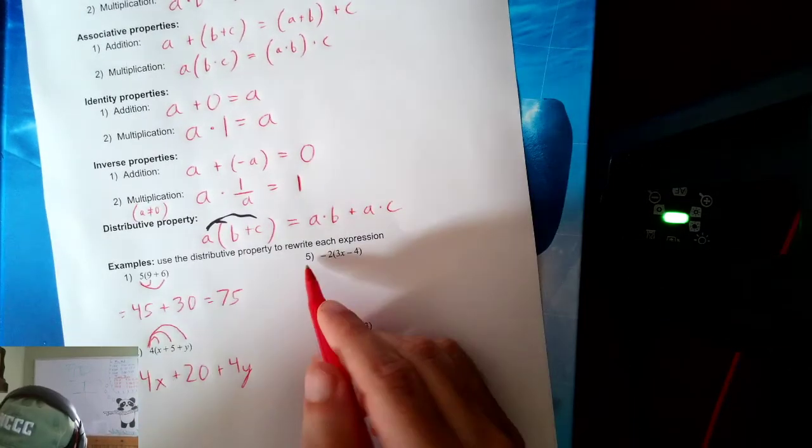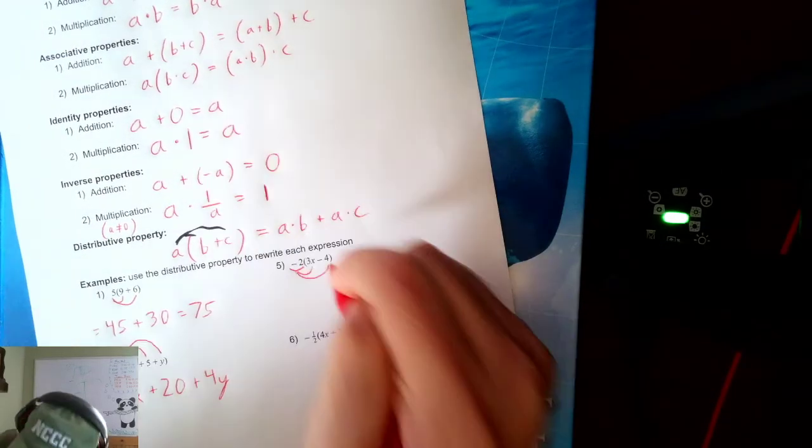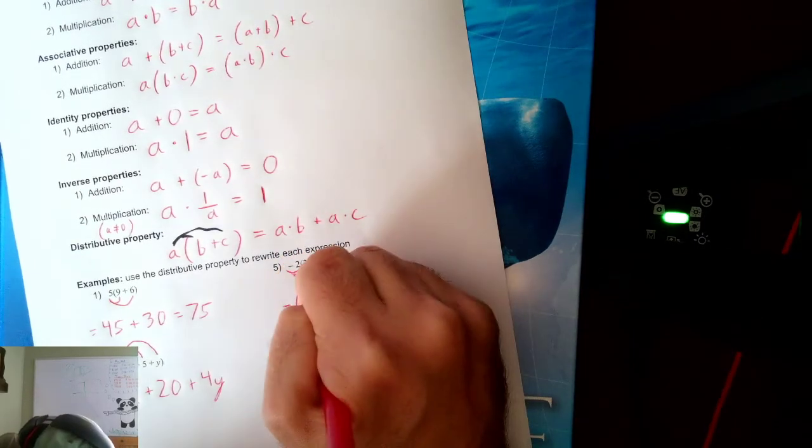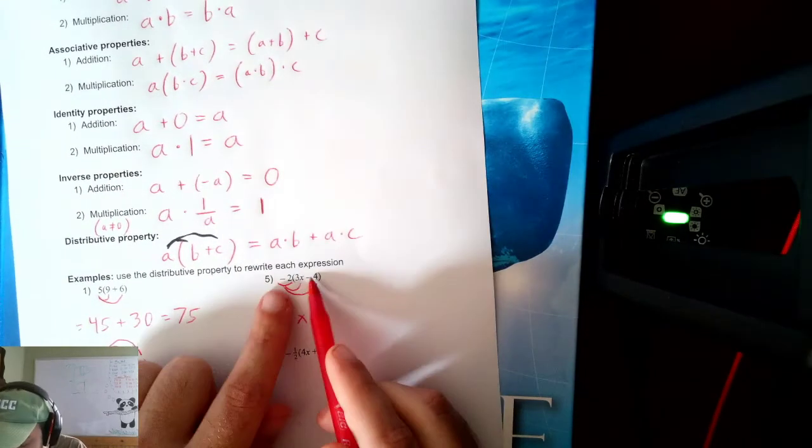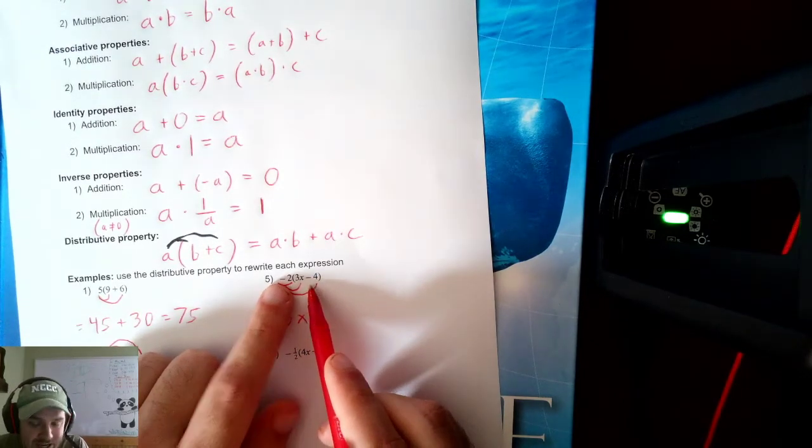Now, my fifth example, I've got a negative 2 out front I want to distribute inside. Negative 2 times positive 3 is negative 6X. Now here, we're going to have two negative and or subtraction signs. Remember, anytime you have two of the same sign, they cancel out to be positive.